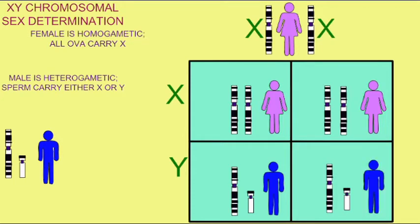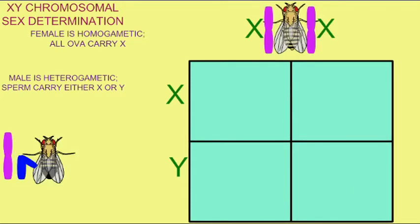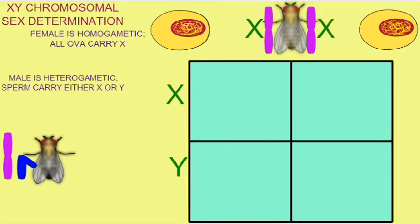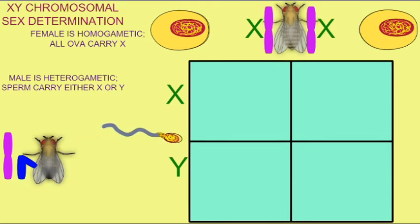The gender of the offspring is determined by which of the two types of sperm fertilize the ova. If an X-bearing sperm fertilizes an ovum, then the offspring is XX and female. If a Y-bearing sperm fertilizes an ovum, then the offspring is XY and male.